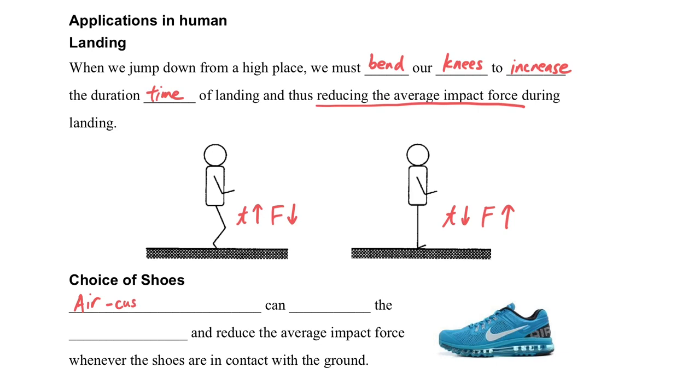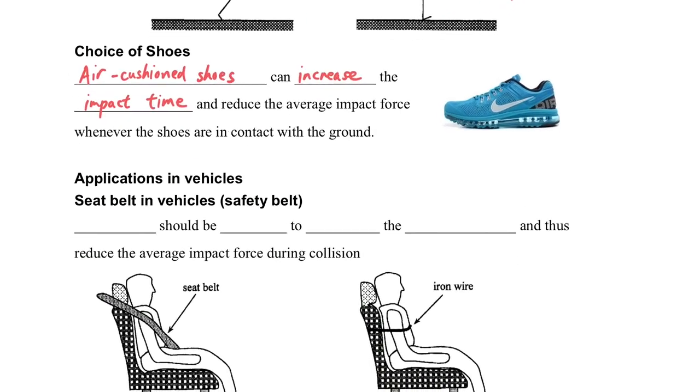Another is the choice of shoes. We know that we have some sport shoes with air cushions. The air cushioned shoes can increase the impact time of the person when he is landing, so it can reduce the average impact force experienced by the person.